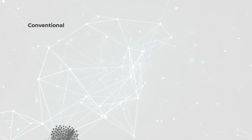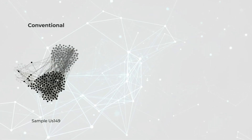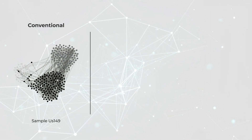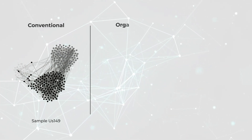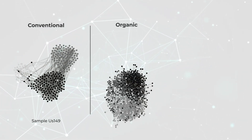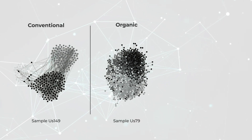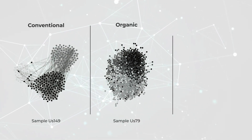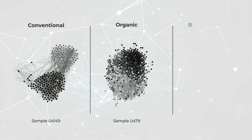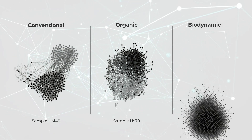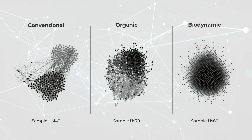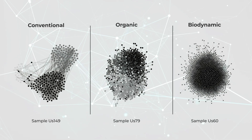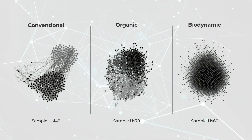Conventionally managed soils clearly give rise to low-clustering, high-modular fungal networks with a higher proportion of co-exclusions, compared with the opposite patterns found in biodynamic management vineyards, which were close to the concept of small-world networks.